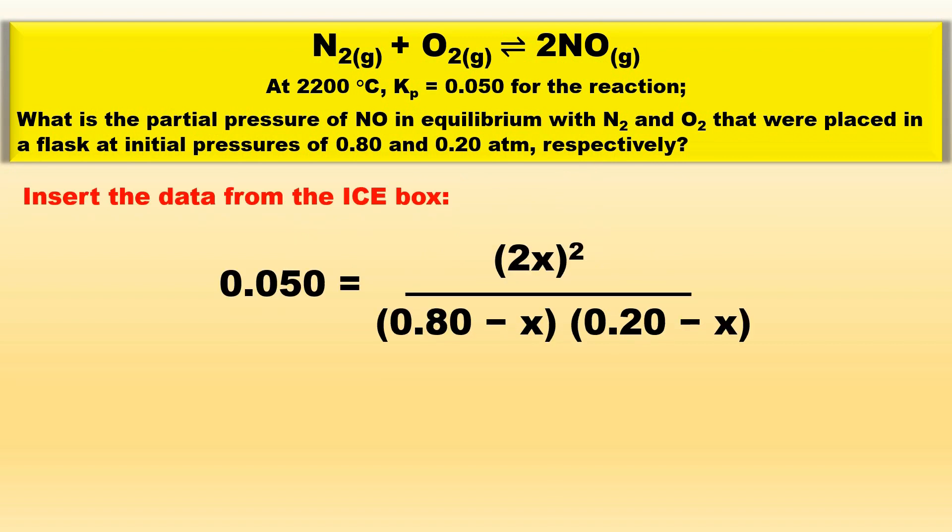Now we insert the data from the ICE box where the Kp value was 0.050. This is equal to 2x squared divided by 0.80 minus x times 0.20 minus x.